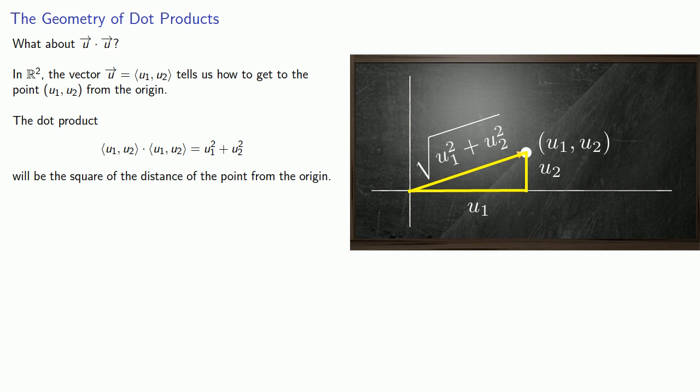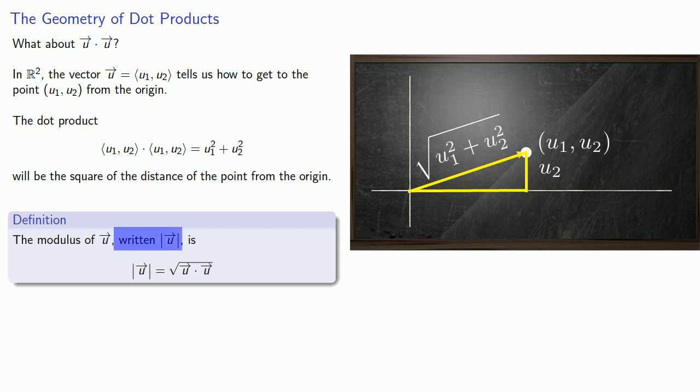And so this leads to the concept of the modulus of a vector written between these vertical bars. Again, there's only so many symbols, so these vertical bars don't mean absolute value, they don't mean determinant, they mean modulus, is going to be defined as the square root of the dot product of the vector with itself.